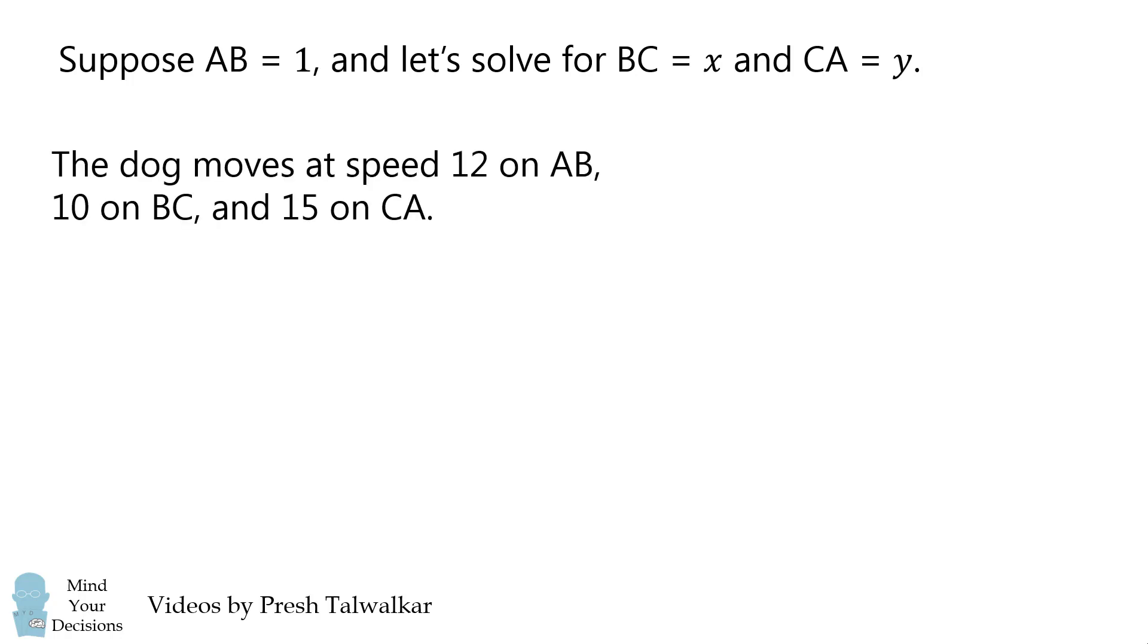The dog moves at speed 12 on AB, 10 on BC, and 15 on CA. What's the total time it takes to run around the triangle? That time t will be equal to AB over 12, plus BC over 10, plus CA over 15.